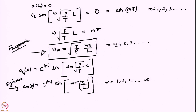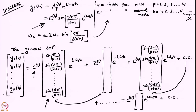We have a countably infinite sequence of frequencies, and for each such frequency there is a particular shape of oscillation. We can write the most general solution to our linear equation as a linear combination of these eigenfunctions multiplied by e to the power i omega_m t. The summation will not run from 1 to n but from 1 to infinity, because it is a continuous system.